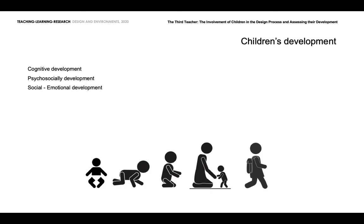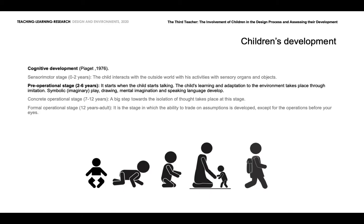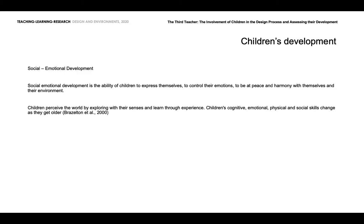Children's participation types have to be changed according to children's development, so it is important to know the literature about children's development. Cognitive and social-emotional development differs according to each age group of children. Cognitive development includes the following states, and the age range in which these states occur may differ for each child; however, the order in which they follow each other is always the same. Cognitive and social-emotional development is the ability of children to express themselves, to control their emotions, and to be at peace and harmony with themselves and their environment. Children perceive the world by exploring with their senses and learn through experience.